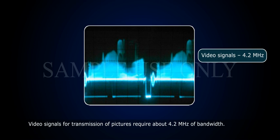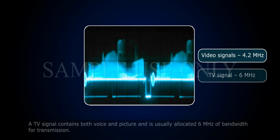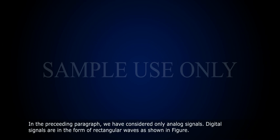Video signals for transmission of pictures require about 4.2 MHz of bandwidth. A TV signal contains both voice and picture and is usually allocated 6 MHz of bandwidth for transmission.